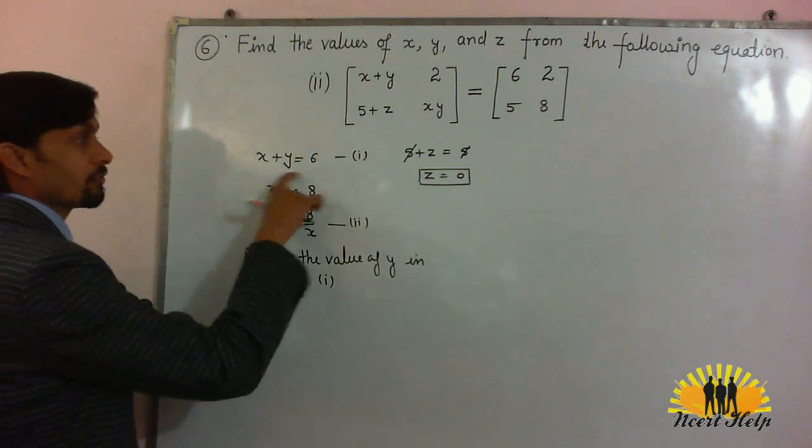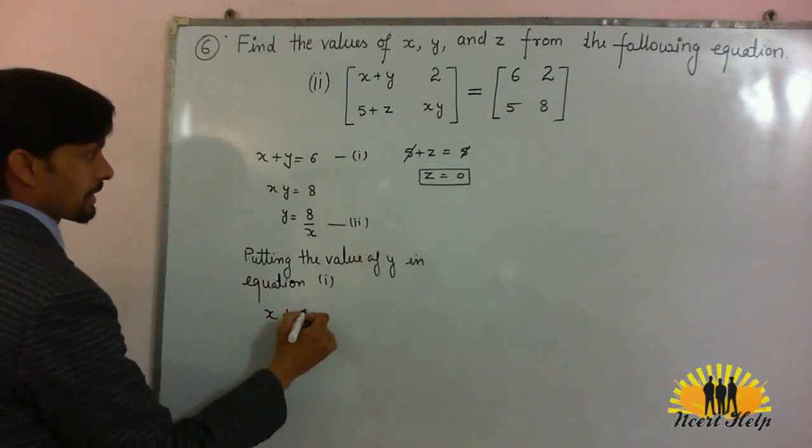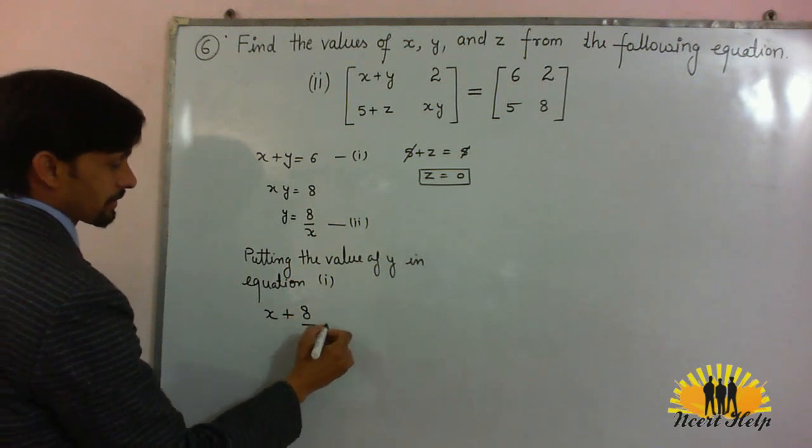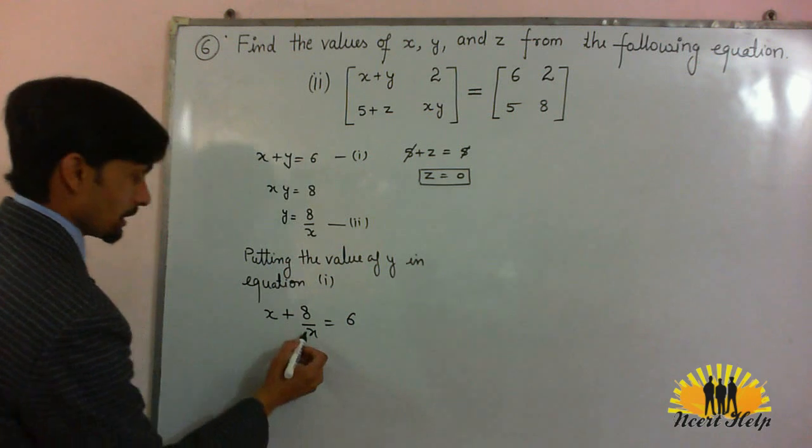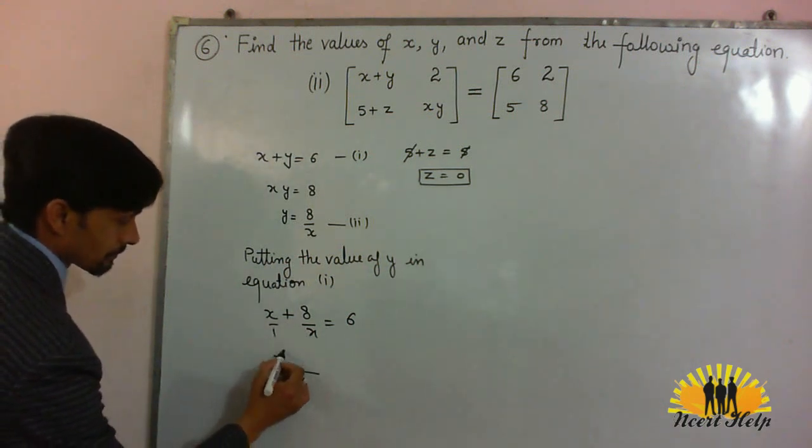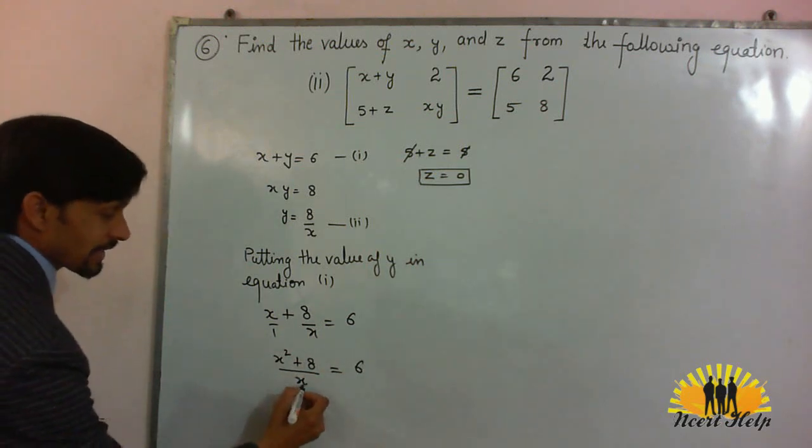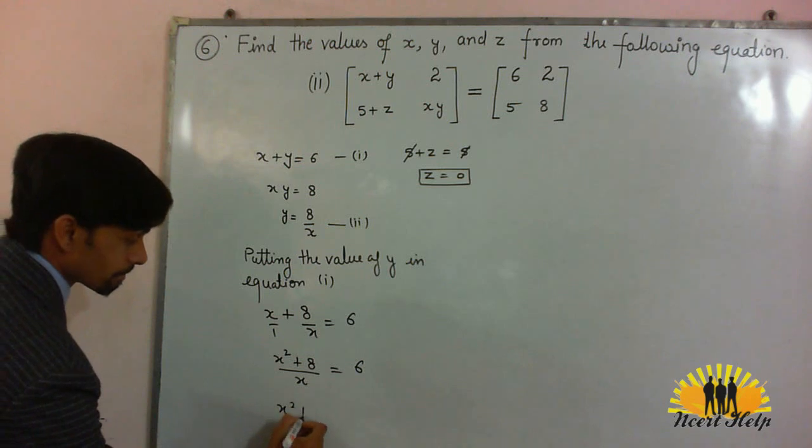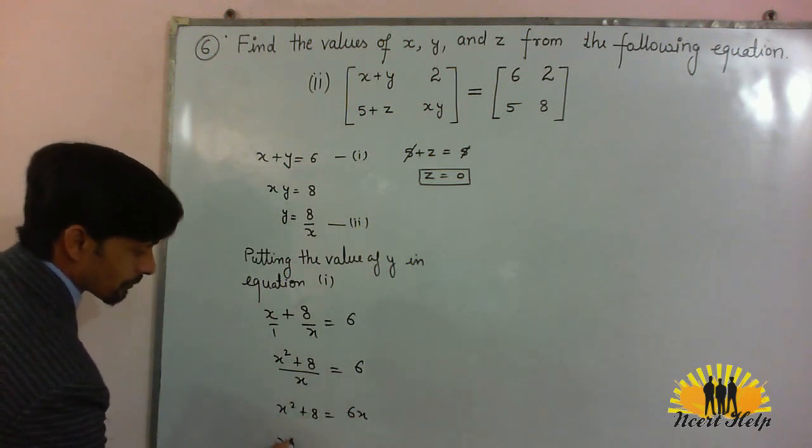So equation 1 will become x plus 8 divided by x is equal to 6. Take LCM. Take this x to that side. Take 6x to this side.